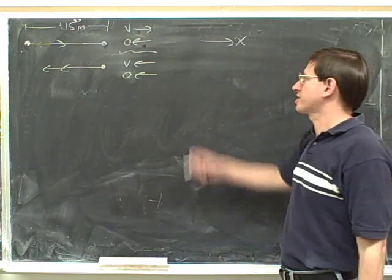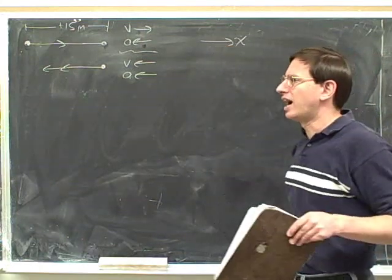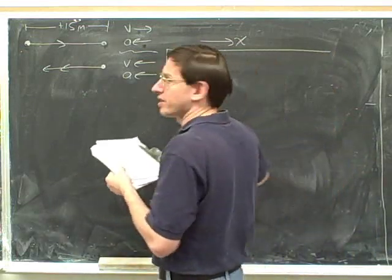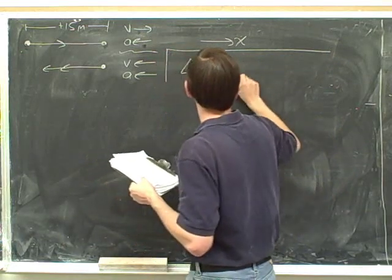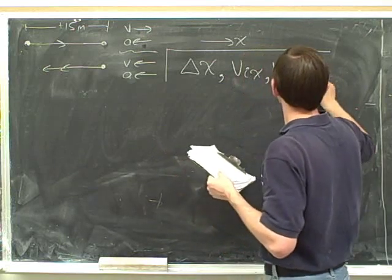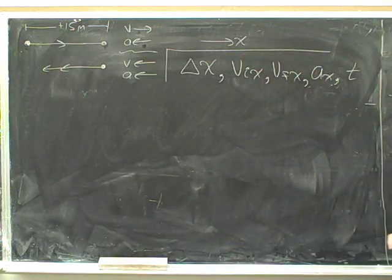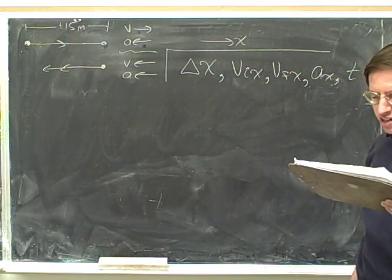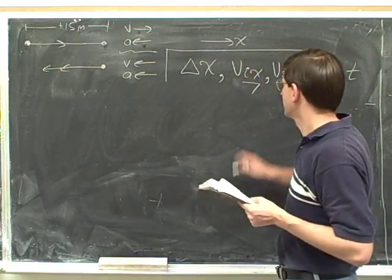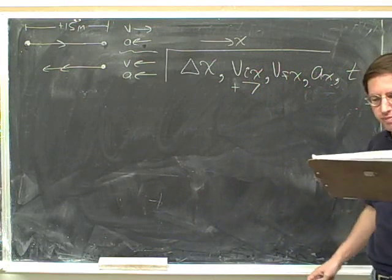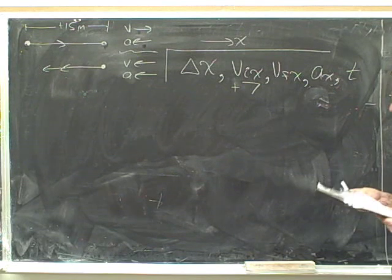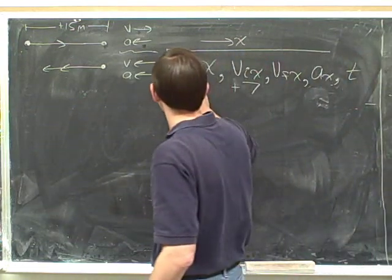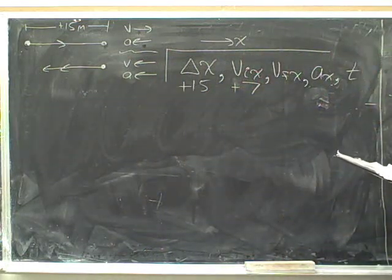We've already chosen to the right as our positive direction. Because this is one-dimensional motion, there's no step three — we don't need to break things into components, so it's on to step four. Let's write down the kinematics variables. An object has an initial velocity of positive 7 meters per second — that's clearly the initial velocity, and we never write a velocity without a sign. The displacement is positive 15 meters.